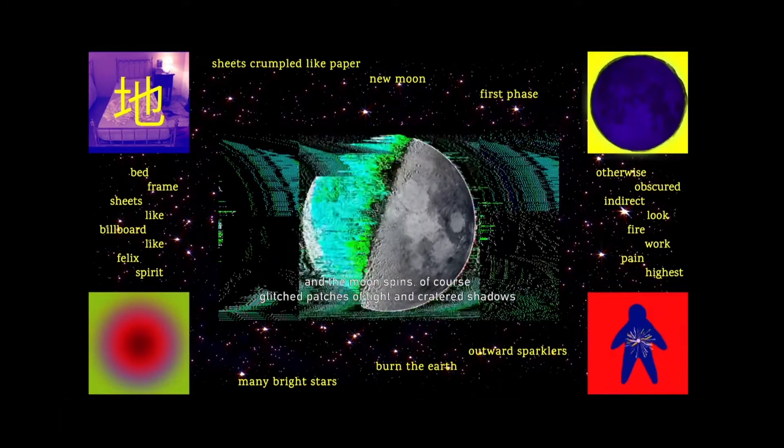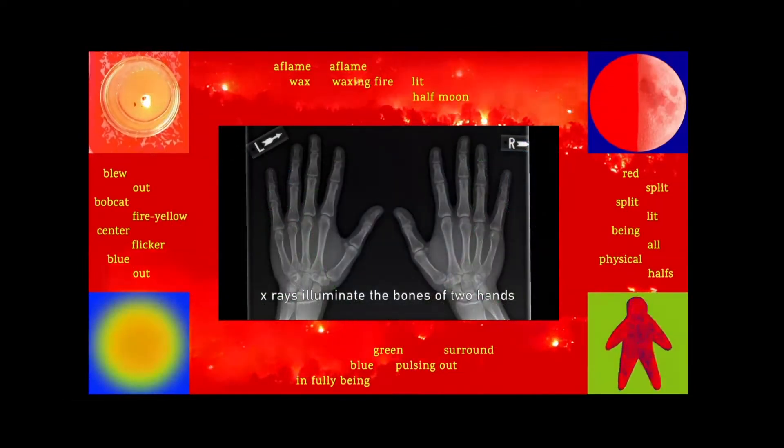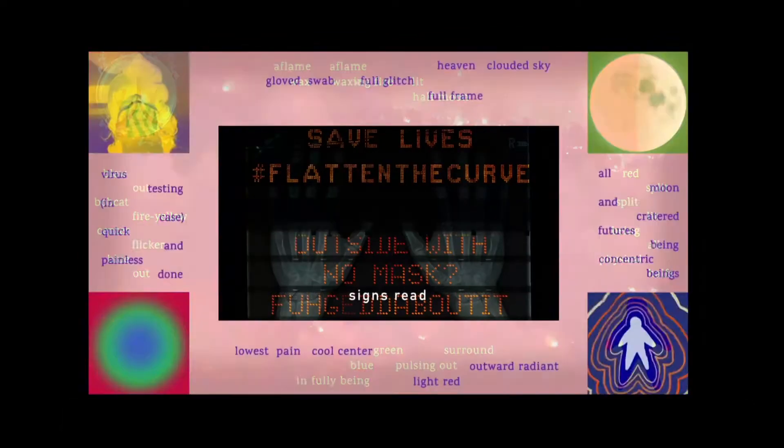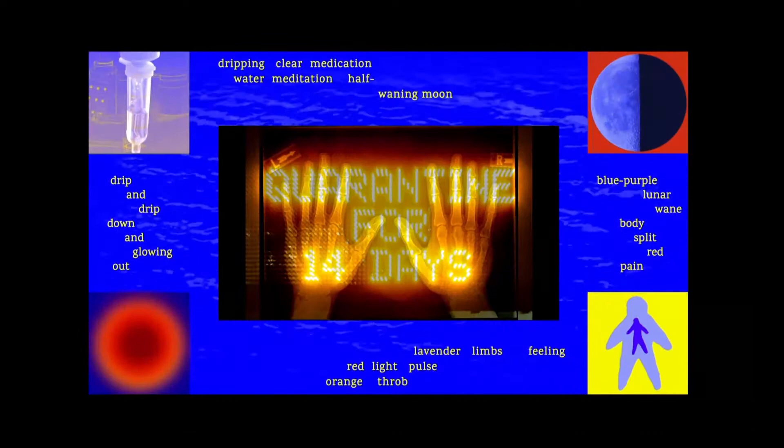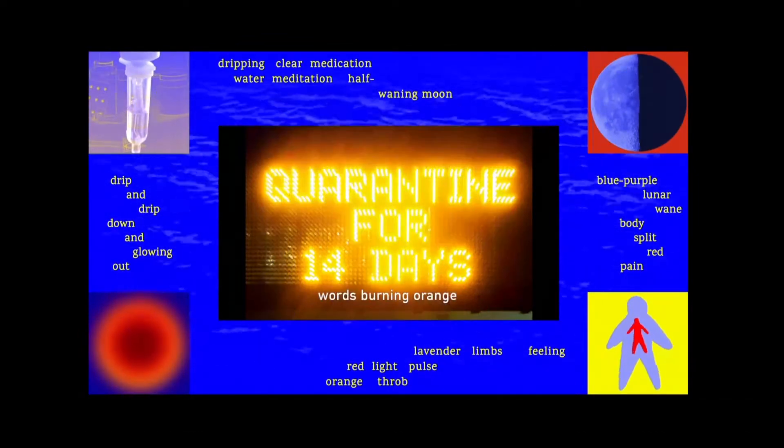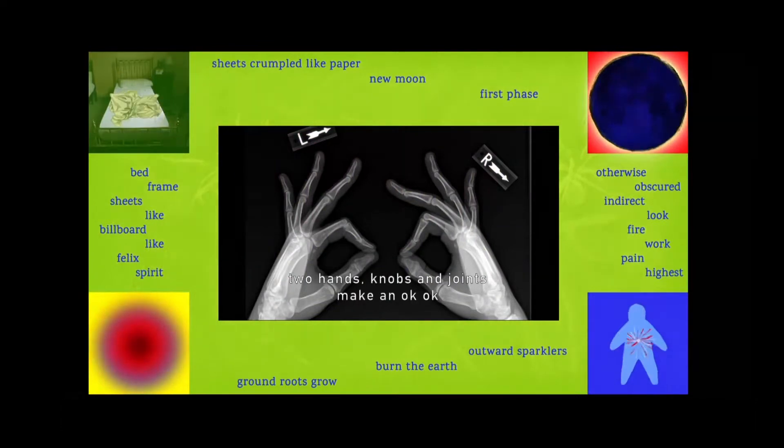And the moon spins, of course, glitched patches of light and cratered shadows. X-rays illuminate the bones of two hands. Signs read: Save lives, hashtag, flatten the curve. Outside with no mask, forget about it. Quarantine for 14 days. Words burning orange. Two hands, knobs and joints, make an okay, okay.